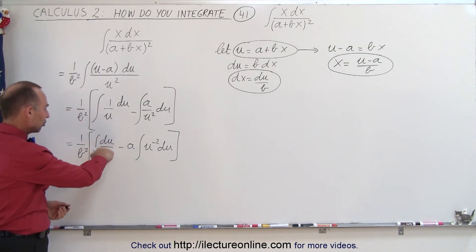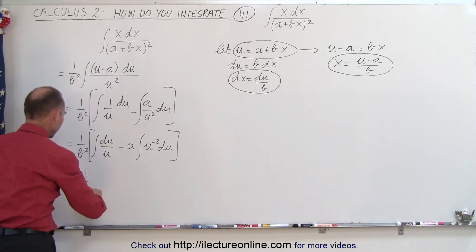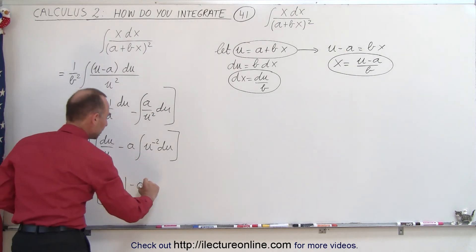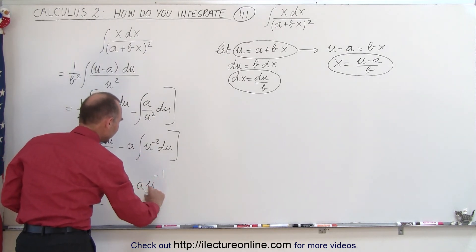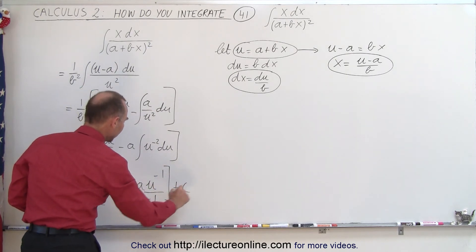This will be the natural log and here we simply add 1 to the exponent. So this becomes equal to 1 over b squared times the natural log of u minus a times this would be u to the minus 1 divided by the new exponent minus 1 and then we still have a constant of integration.